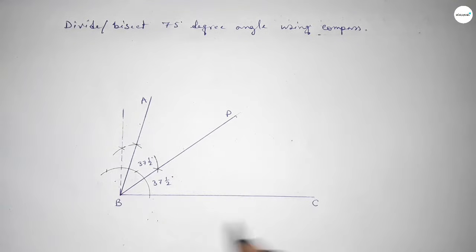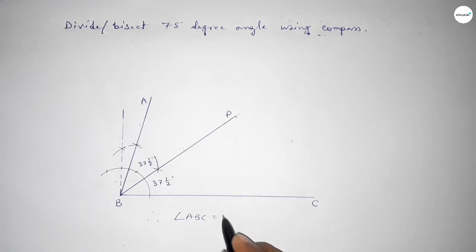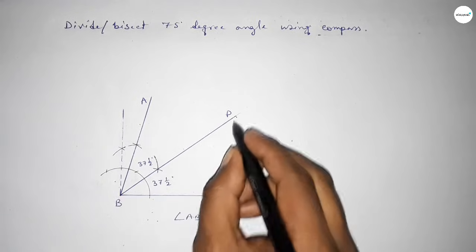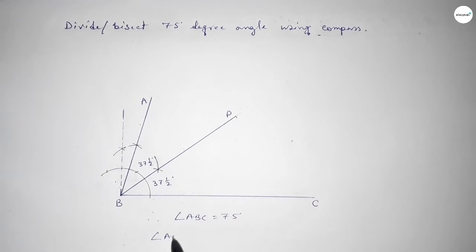So therefore, angle ABC equals 75 degree angle, and angle ABP and angle PBC equal 37 and 1 over 2 degree angle. That's all, thanks for watching. If this video is helpful to you then please share it with your friends.